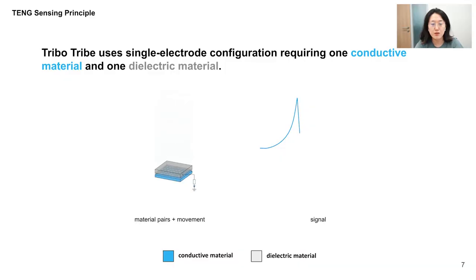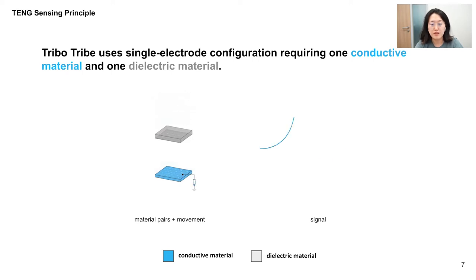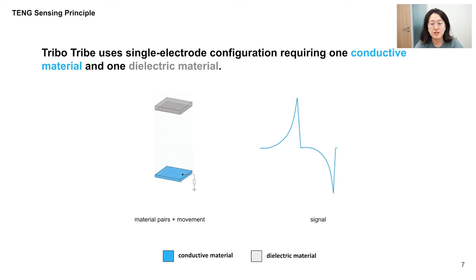TriboTribe uses a single electrode configuration that only needs two materials: one conductive and the other dielectric. When two materials come closer, the electrodes on the conductive material flow to ground, resulting in a positive voltage. When the two materials are separated, the result is a negative voltage.